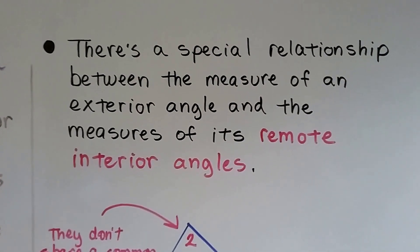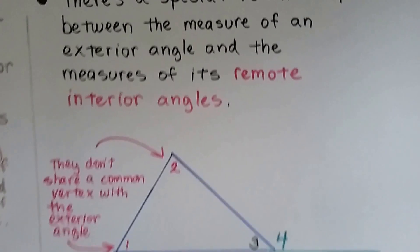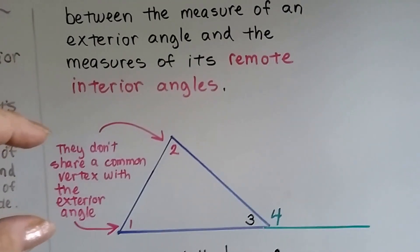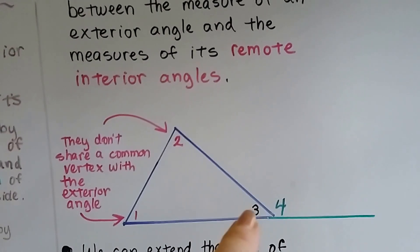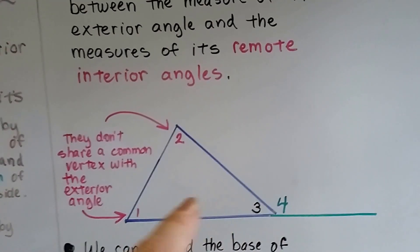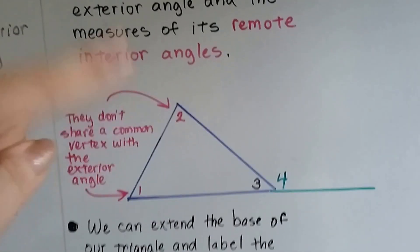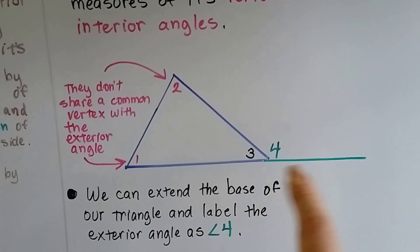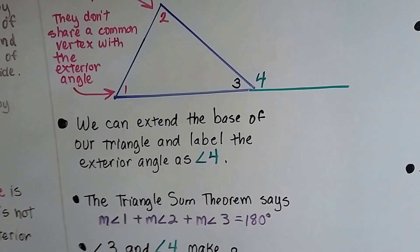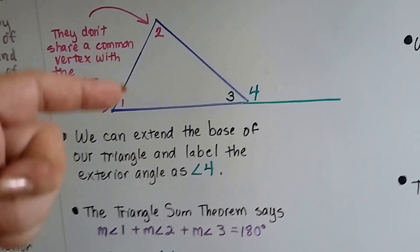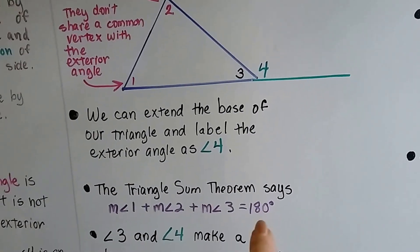There's a special relationship between the measure of an exterior angle and the measures of its remote interior angles — they don't share a common vertex with the exterior angle. Here's the exterior angle; angle three is sharing a common vertex with it, but angles one and two don't. We can extend the base of our triangle and label this exterior angle as four. The triangle sum theorem says that the measure of angle one, measure of angle two, and measure of angle three total 180 degrees.